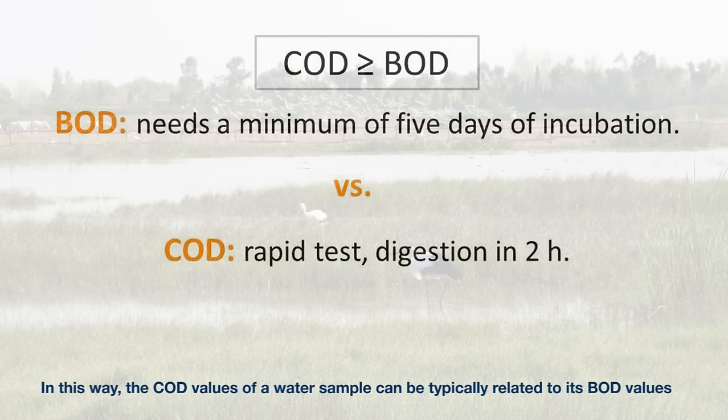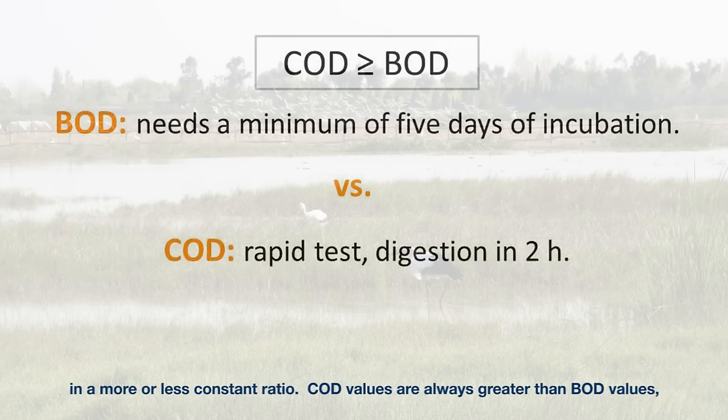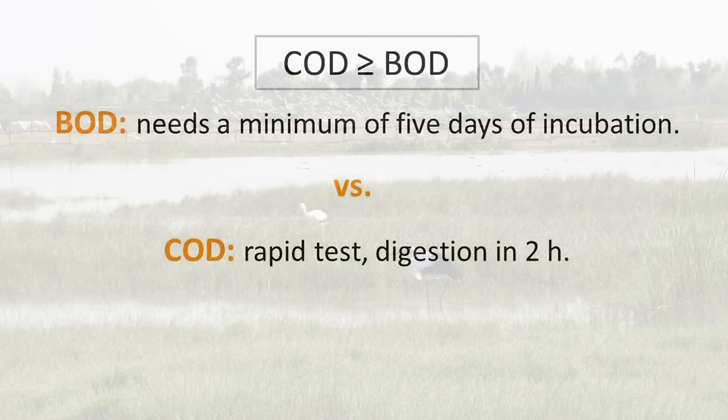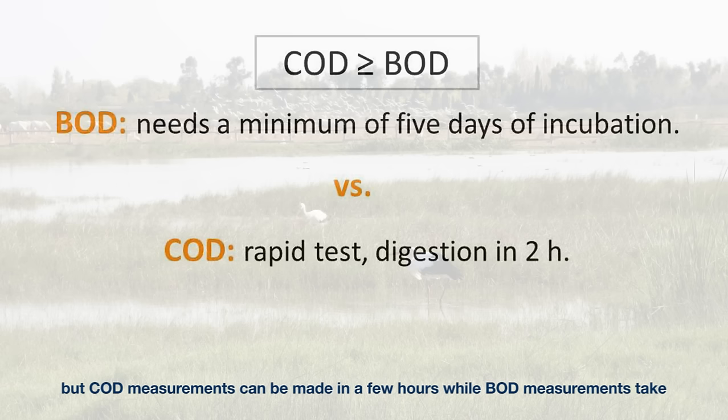In this way, the COD values of a water sample can be typically related to its BOD values in a more or less constant ratio. COD values are always greater than BOD values, but COD measurements can be made in a few hours, while BOD measurements take at least five days.